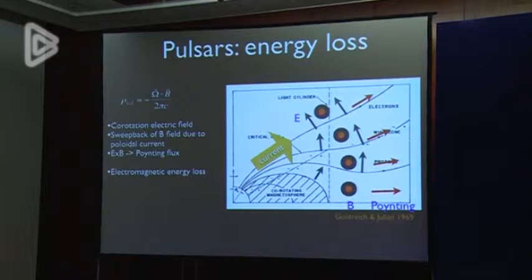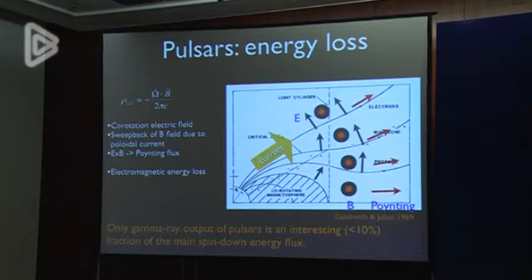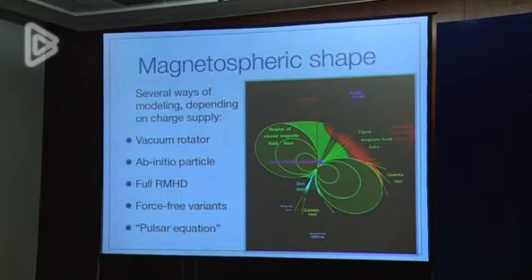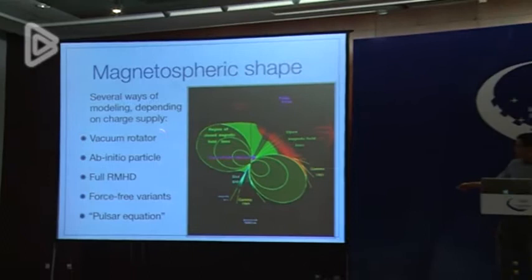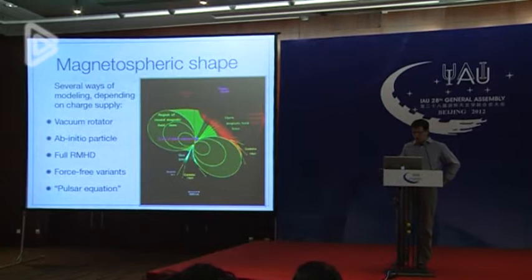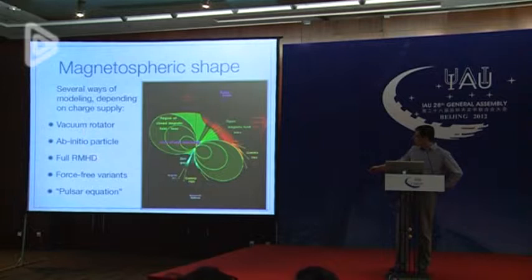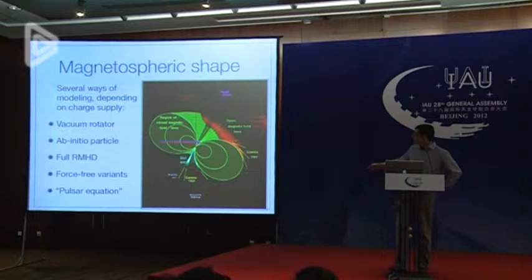The spin-down is not normally seen directly, but in gamma rays we're actually starting to sample a significant fraction of the spin-down energy flux, so it's interesting to look at gamma rays in particular. The models we have right now depend on the amount of plasma assumed in the magnetosphere, ranging from pure vacuum models with no plasma to fully filled magnetospheric models described by force-free electrodynamics, and in between there is full relativistic MHD which includes plasma inertia, and also ab initio particle approaches that simulate everything self-consistently.